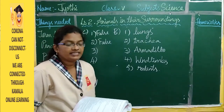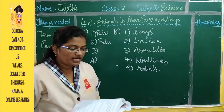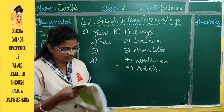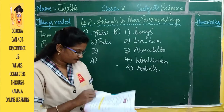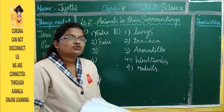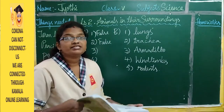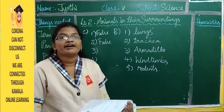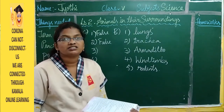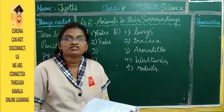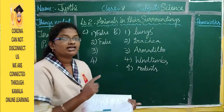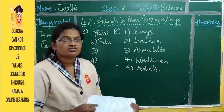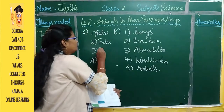True or False: Mosquitoes have a proboscis to suck blood — this is false. Butterflies have a proboscis, but mosquitoes have a needle-like structure. Only butterflies have the proboscis; mosquitoes do not.